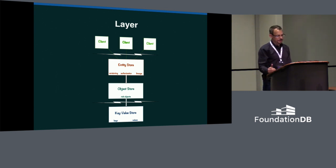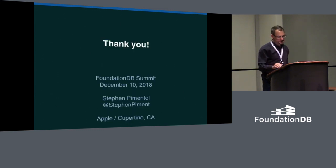This rich data model is mapped to the key value store. Versioning, authorization, and lineage are incorporated directly into the data model layer, so clients get them for free. Transactions allow multiple clients to concurrently access entities without fear of inconsistent results or data corruption. And thank you very much.